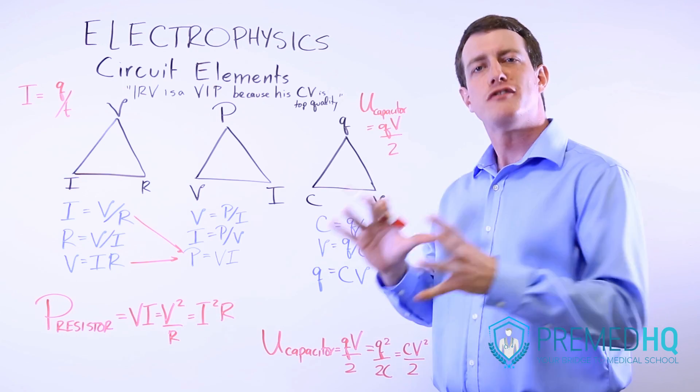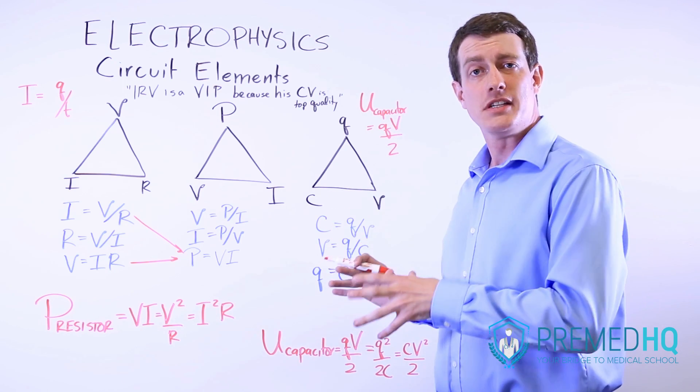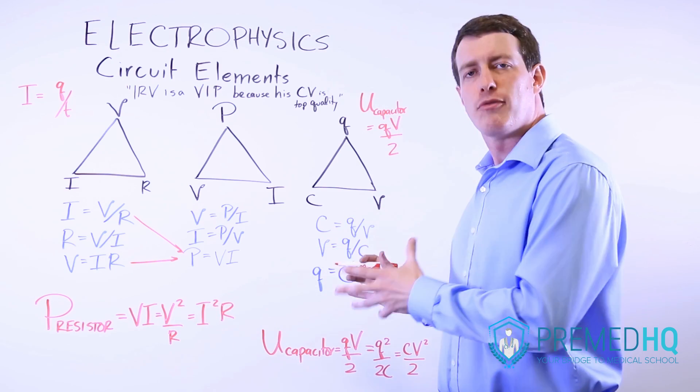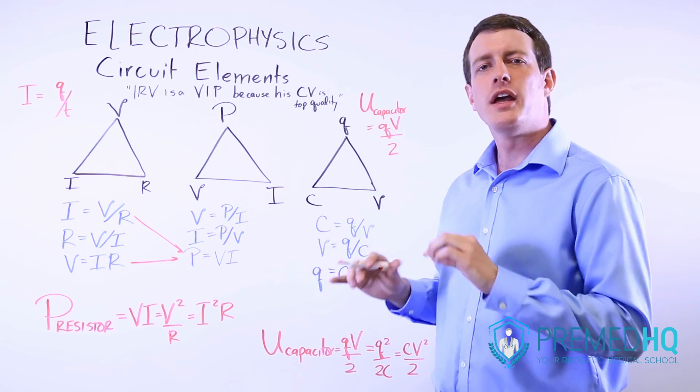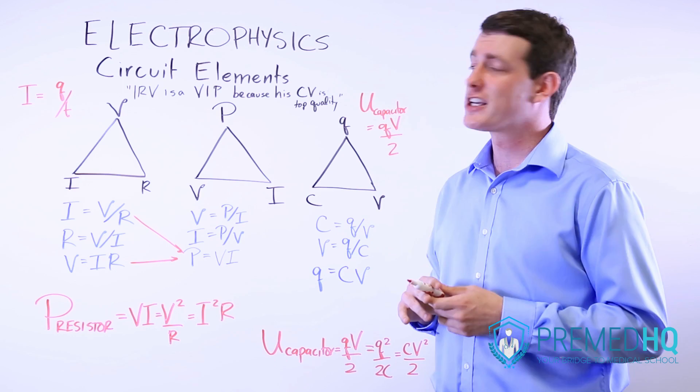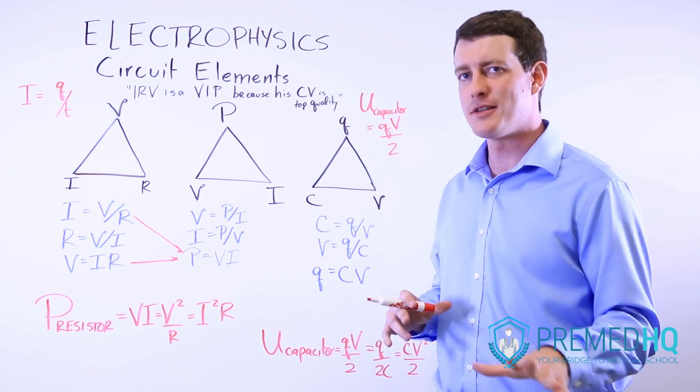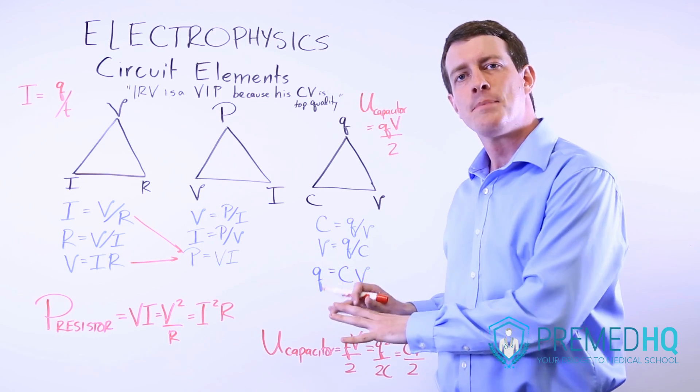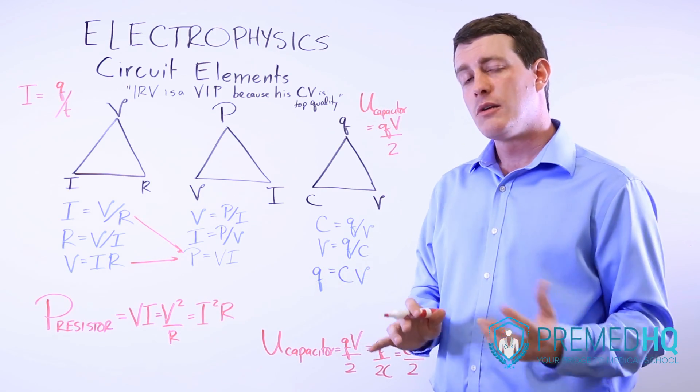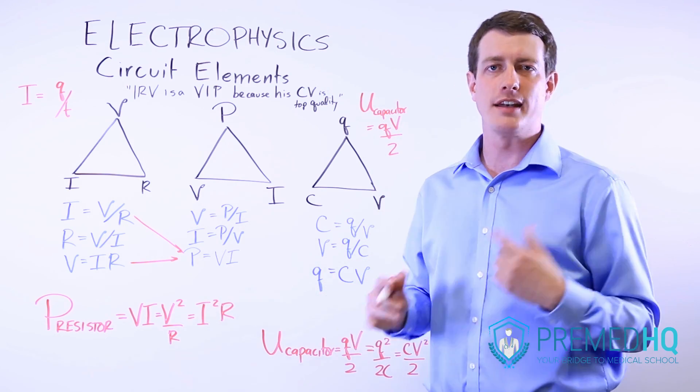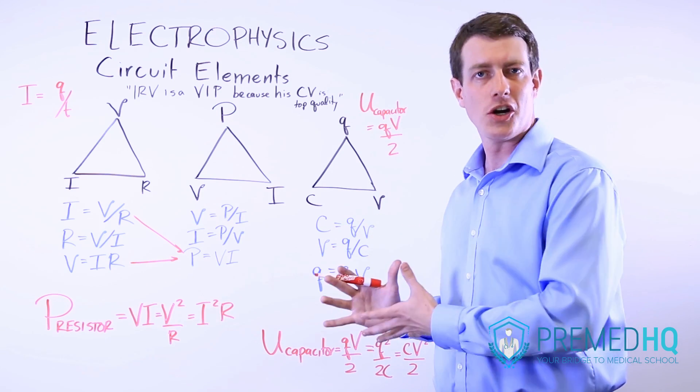So now we'll take Irv as a VIP because his CV is top quality, and take it a step further to evaluate the contributions of major circuit elements. And so the two major elements that you'll be dealing with, other than the battery which provides voltage, are resistors which generate power, and capacitors which store charge.